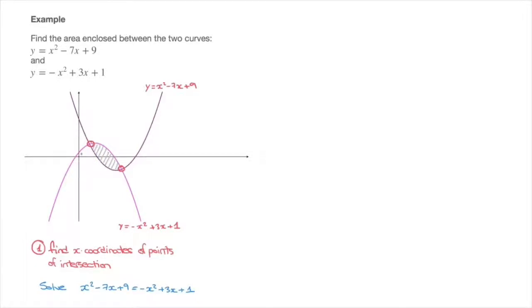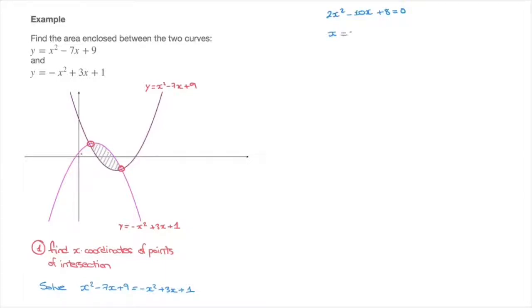To solve this for x, we gather all terms on the left-hand side of the equation. After simplifying, we find 2x squared minus 10x plus 8 equals 0. This is a quadratic equation which can be solved using the quadratic formula or by factoring. Doing so, we find two solutions: x equals 1 and x equals 4.